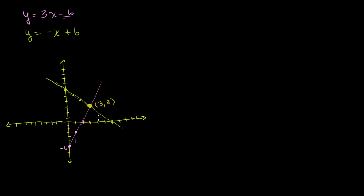Let's see if x is equal to 3, y equals 3 satisfies both equations. Checking into the first equation: 3 is equal to 3 times 3 minus 6, which is 9 minus 6, which is indeed 3. So 3 comma 3 satisfies the top equation. Checking the bottom equation: 3 is equal to negative 3 plus 6, and negative 3 plus 6 is indeed 3. So even with our hand-drawn graph, we were able to find the point 3 comma 3, and it does satisfy both equations.